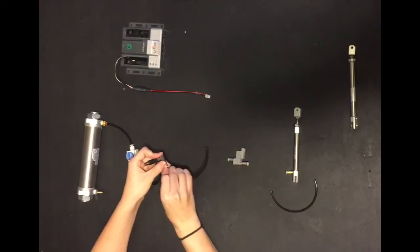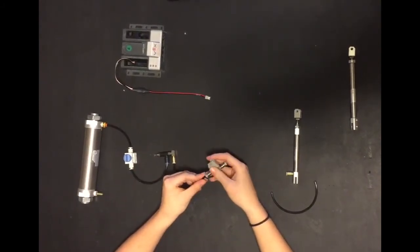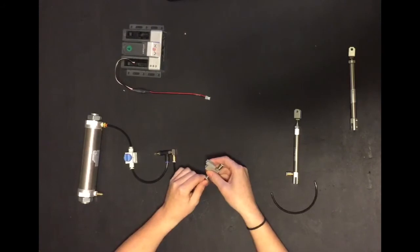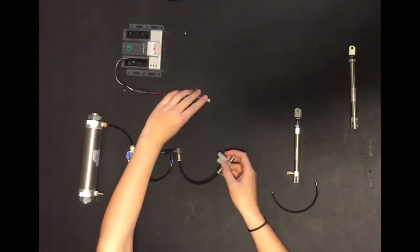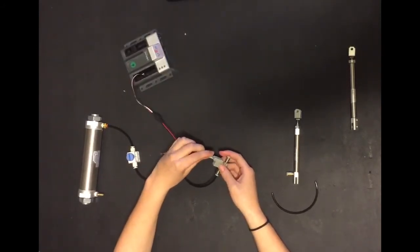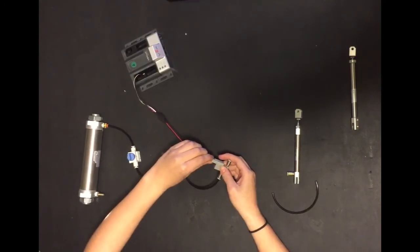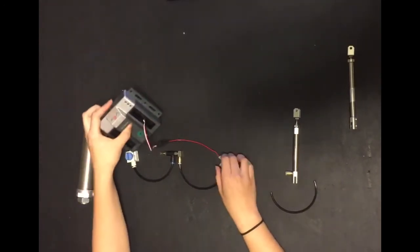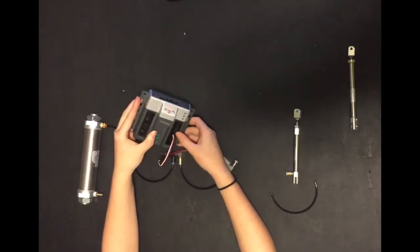The next thing you plug in will be the solenoid valve. This allows you to program actions of the piston. You're going to want to plug in your solenoid control into the top like so. When you plug this into your VEX Cortex, you're going to plug it into your digital ports.